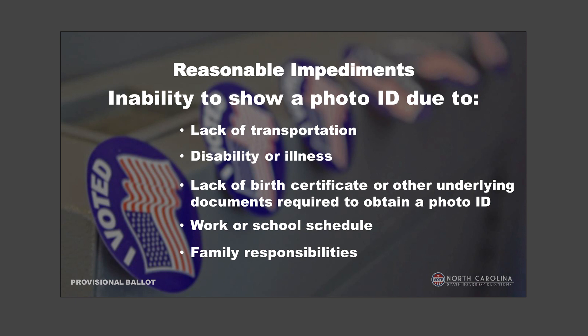Reasons people use for the photo ID exception form — impediments — include lack of transportation, which is common. If somebody is in a hospital, hospice, nursing home, or just at home without a vehicle, they can say they haven't had a way to get anywhere to get an ID renewed. North Carolina is a vast state where you need a car to get around. That's a valid reason. Disability or illness is also a valid exception — people who are disabled and simply can't get anywhere.